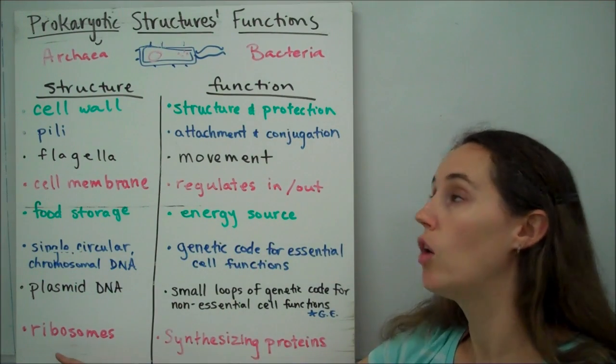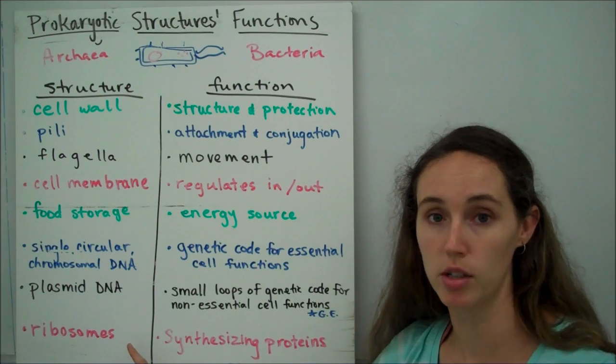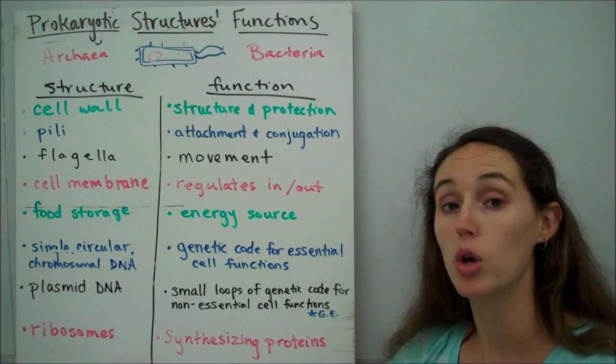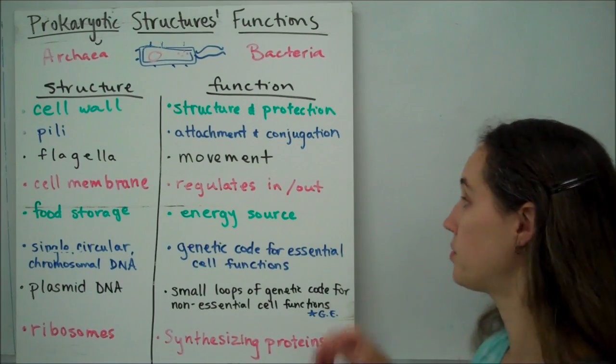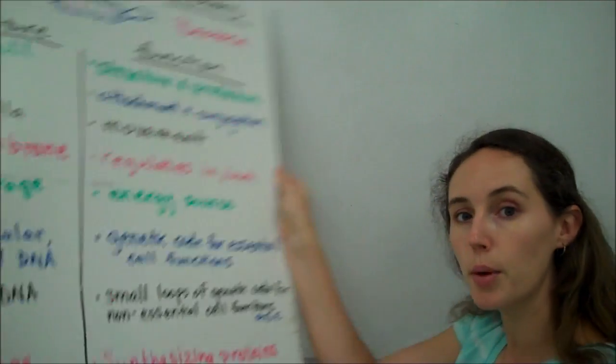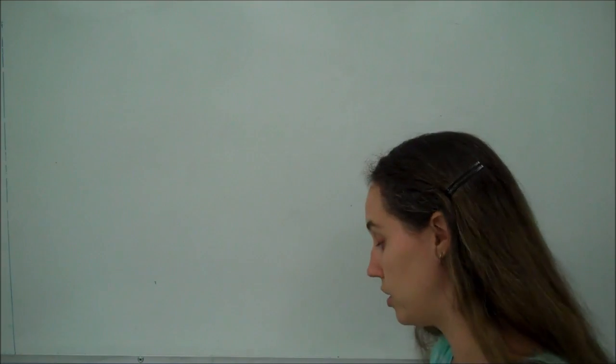And finally, all prokaryotic cells, as well as eukaryotic cells, have ribosomes, whose job it is to help synthesize proteins. All right, now let's compare that to eukaryotic cell structure.